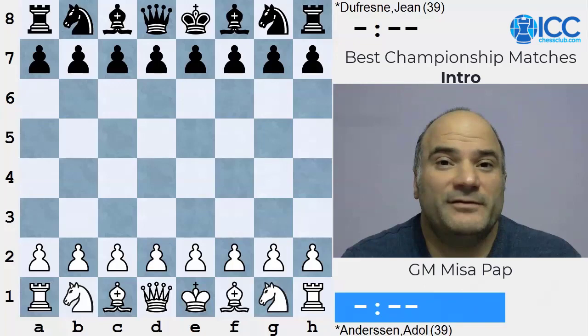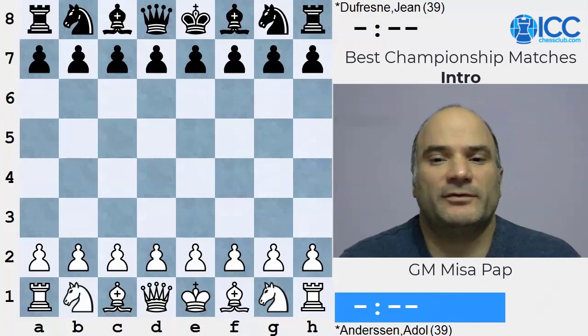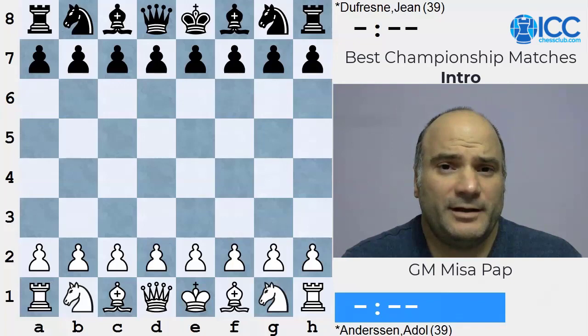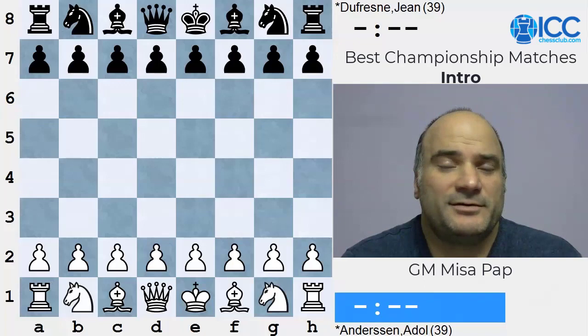That 1851 tournament was played in a knockout format - a series of knockout matches. It was won in the end by Adolf Andersen - the famous and brilliant Adolf Andersen. Andersen was born and lived all his life in Breslau, which is nowadays called Wrocław. He was considered to be the strongest player in the world from that win in 1851 onwards.